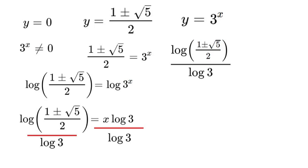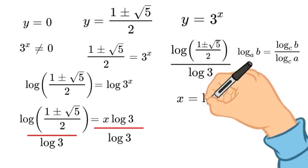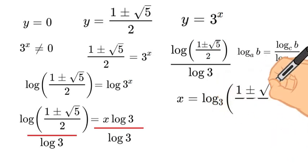Now we can go ahead and use some log properties here to simplify it even further. If we have log_c(a/b), it equals log_c(a) over log_c(b). Now we can rewrite this log fraction so that 3 is next to our log. So it would look like x equals log_3 of (1 plus or minus square root of 5 over 2).